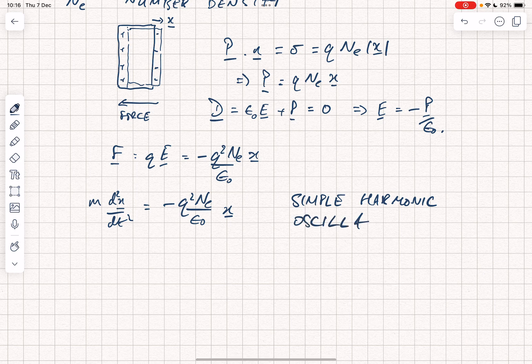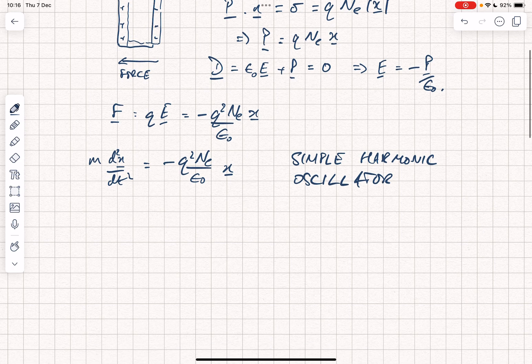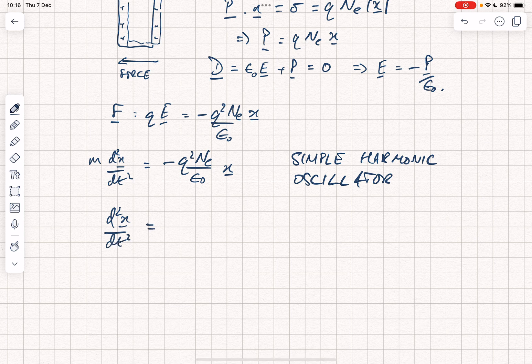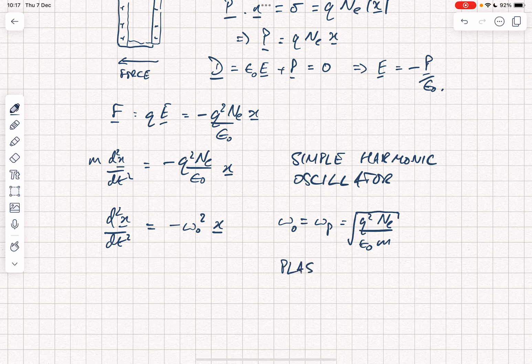We know how to solve the simple harmonic oscillator. It gives us, as the name suggests, an oscillation. We typically write d2X by dT squared is equal to minus omega 0 squared X, where omega 0, which we actually call here omega P because it's the plasma frequency, is the square root of Q squared Ne over epsilon 0 m. And that is the plasma frequency.